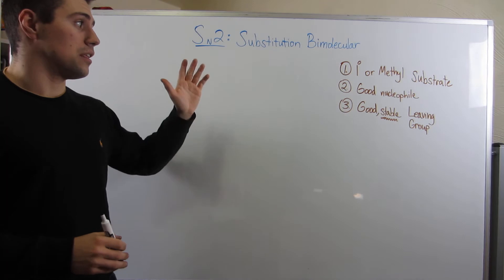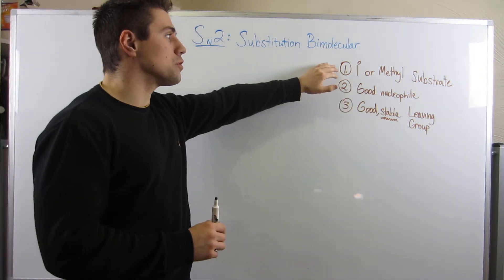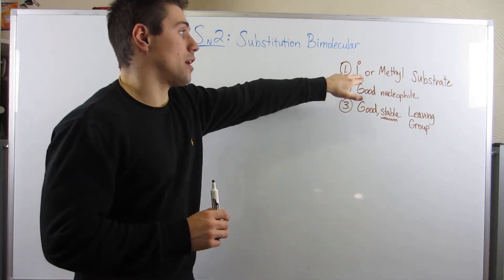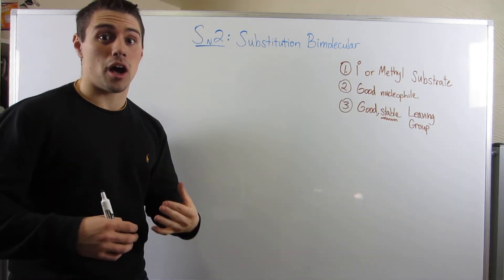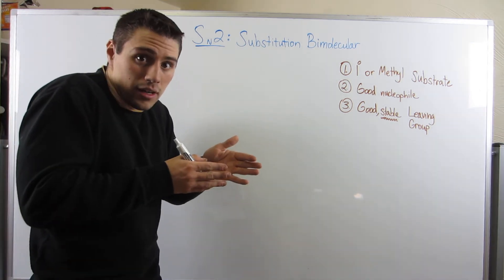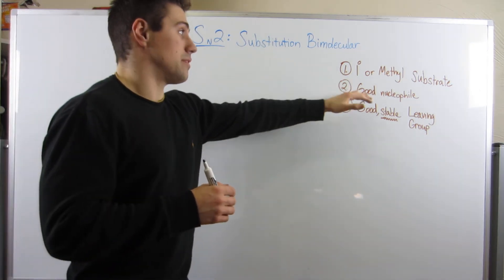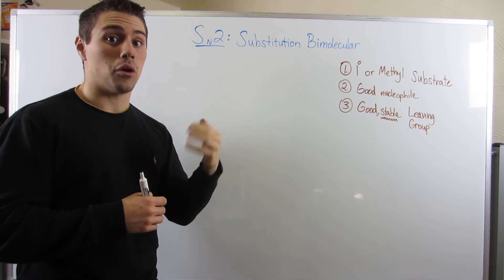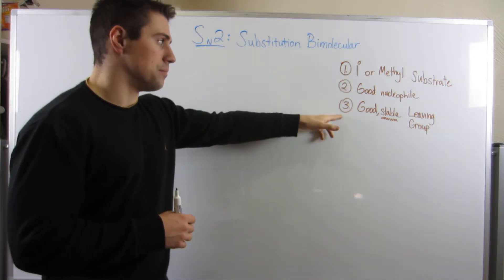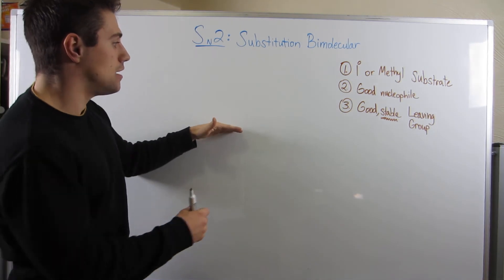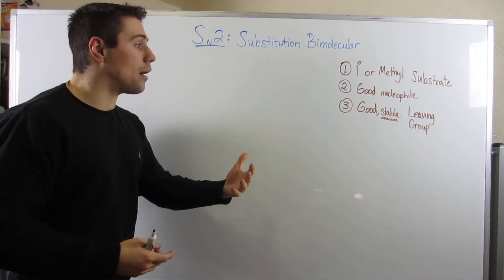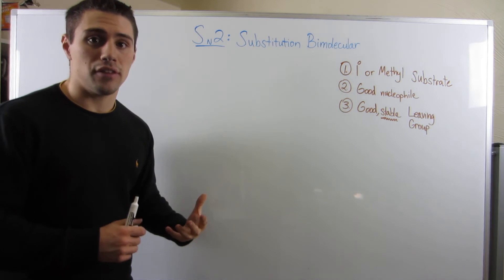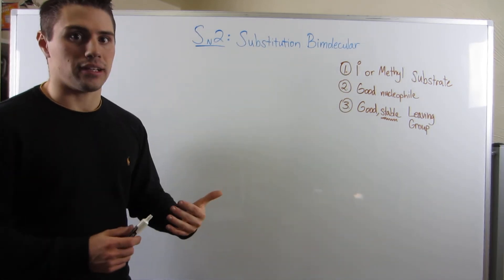Remember, I'm going to add one rule at the end, but the things that tip you off that you're doing an SN2 reaction: you're looking for a primary or methyl substrate. We want limited sterics so our nucleophile can nestle in and attack from the backside. That means you need a good nucleophile — something very negative, looking to attack a positive or partially positive atom. And remember, you need a leaving group that's going to be okay with leaving, but it needs to be stable — nature likes stability.